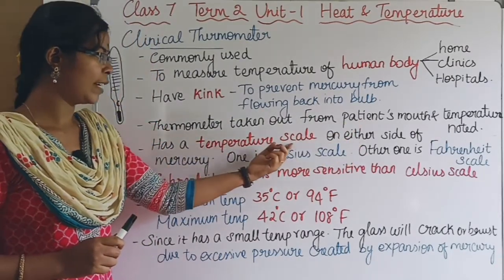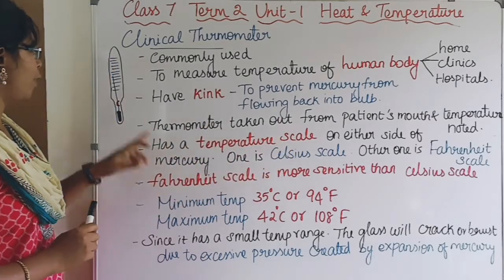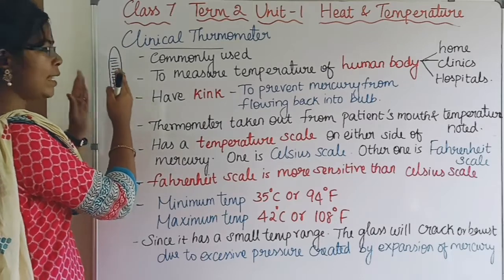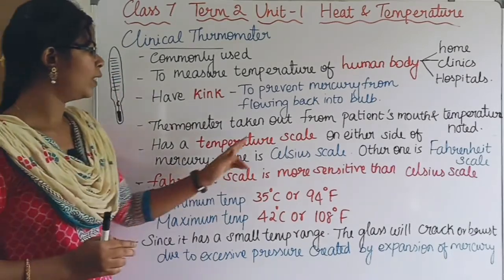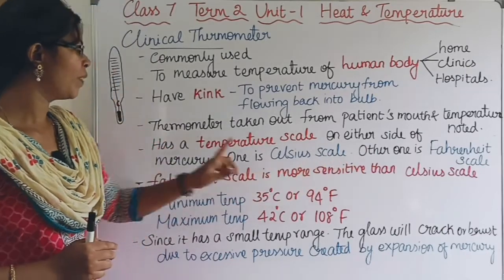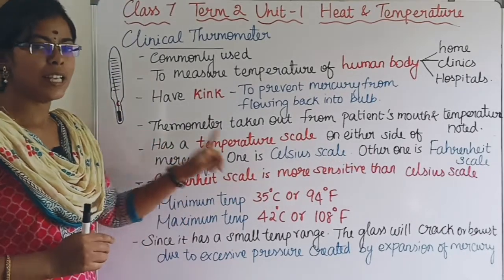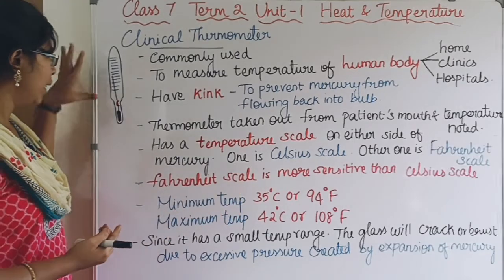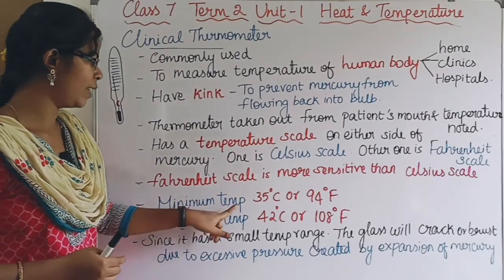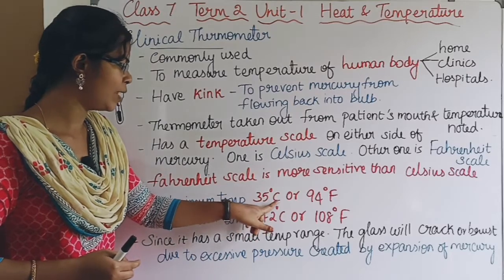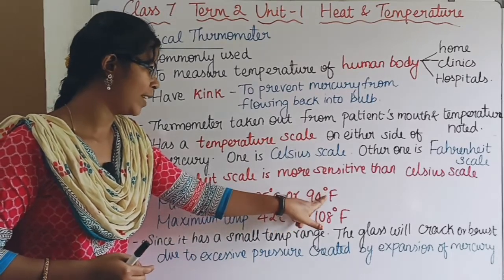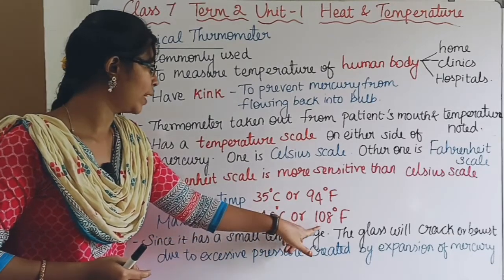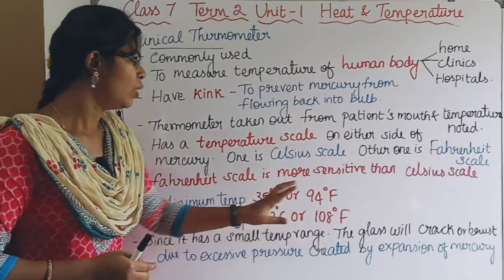Now let's talk about the temperature scale. The mercury increases and expands on either side. One scale is the Celsius scale and another is the Fahrenheit scale. The Fahrenheit scale is very sensitive. In this clinical thermometer, the minimum temperature is 35 degrees Celsius or 94 degrees Fahrenheit. The maximum temperature is 42 degrees Celsius or 108 degrees Fahrenheit.